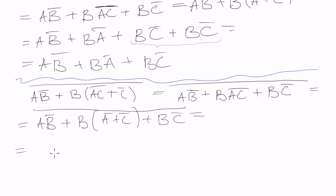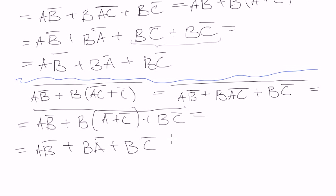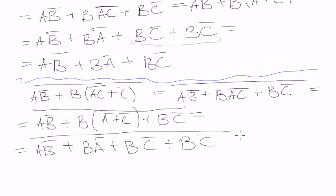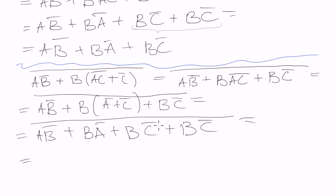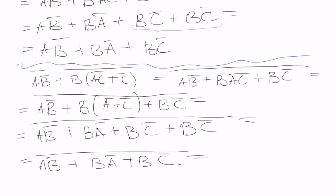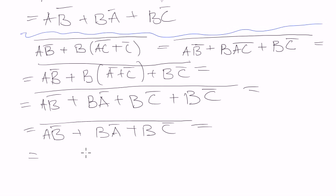Let's open this bracket here - it would be more interesting. Again A·B negated, plus, open the bracket, B·A negated, plus B·C negated. Again the same thing: B·C negated. Then we see that we have B·C twice, so we can just drop one of those two, and then we have a big negation. So basically the same example but with a big negation.